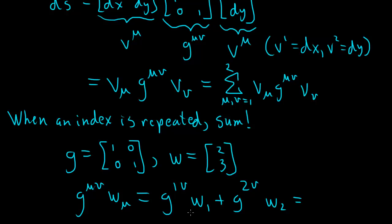So this is going to now be, there's one index left, a nu left, so this is going to be a vector. So when nu equals 1, that's the top component of this vector, then we have G1, 1, W1, plus G2, 1, W2. This is 0, and this is 1 times 2. So there's a 2 up here.